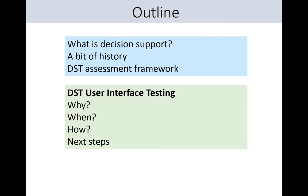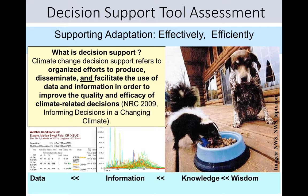Let's focus on what is a decision support tool, or what is decision support. I like to use the definition from the National Academy report on informing decisions in a changing climate. It says that we're looking at not just producing and disseminating data and information, but also facilitating the use of that data and information in order to improve the quality and effectiveness of climate-related decisions. That's where decision support tools come in — going beyond just providing data, but helping people develop their knowledge and connect that to their priorities and the wisdom they have in managing their resources.